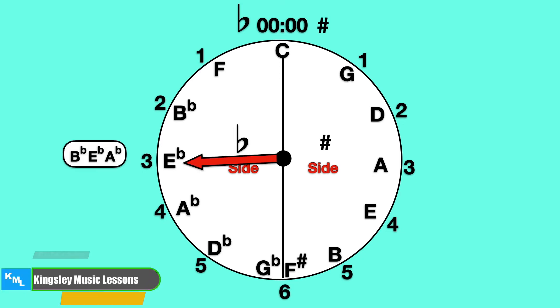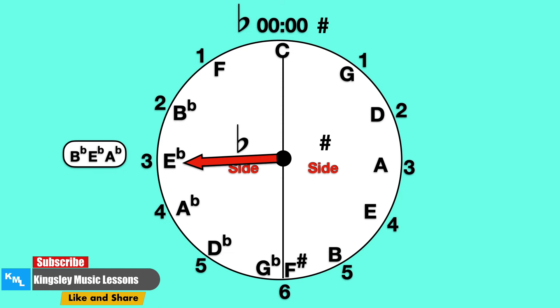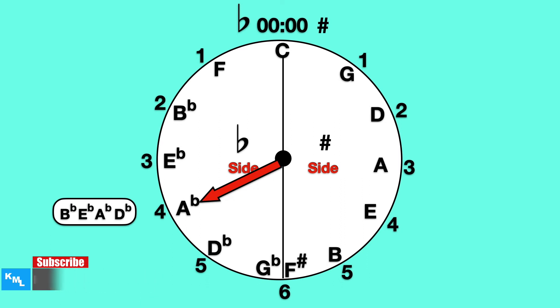E flat major has three flats: B flat, E flat, and A flat. A flat major has four flats: B flat, E flat, A flat, and D flat.